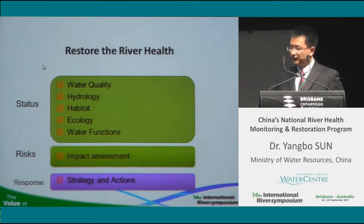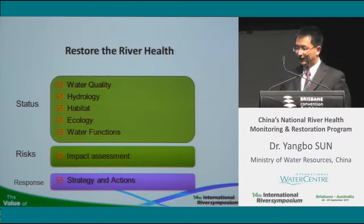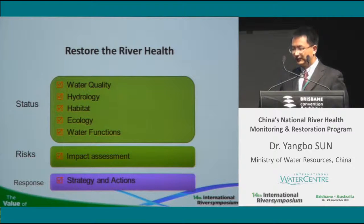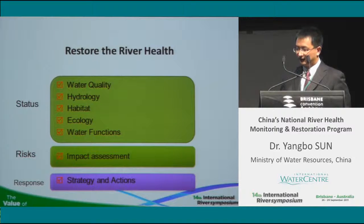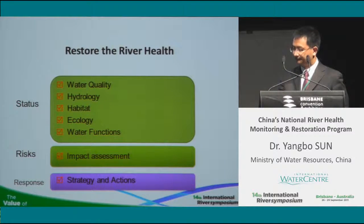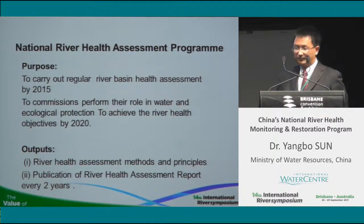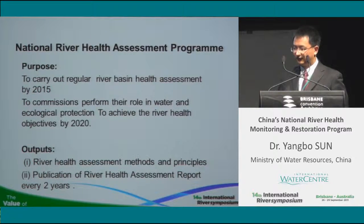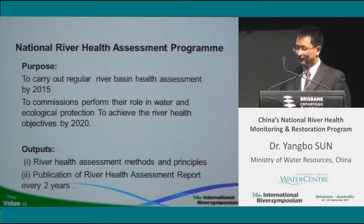In order to restore river health in China, a comprehensive action plan has been scheduled, comprising three parts. We have an ambitious target to restore the river health of China by the year 2020. First, we need to evaluate the current health status of rivers and analyze the risks we are facing. Then we need to provide responses and actions to address these challenges, followed by an action plan to restore river health.